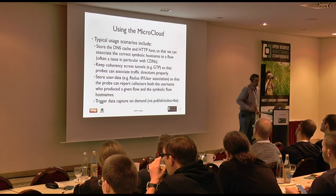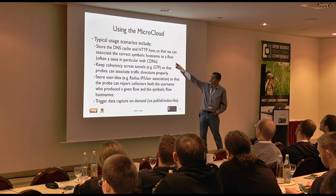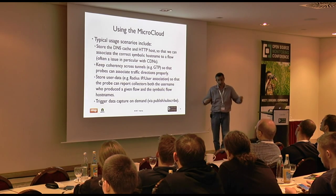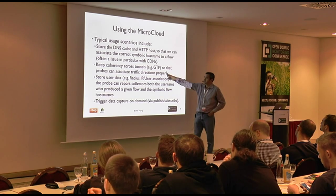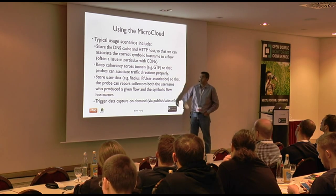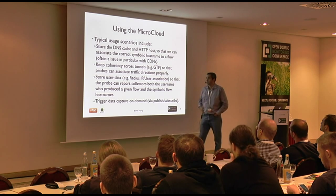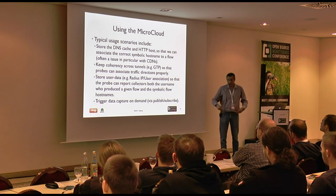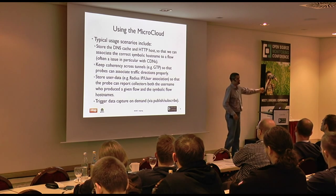Typical uses include storing the DNS cache — if you have multiple locations, everyone can go there instead of one central place. We store information about tunnels like GTP, a protocol used in mobile networks. For example, today I'm here in Nuremberg but if I go to the city center I will attach to another cell. If I want an aggregate view of what my phone is doing, I am forced to monitor several different points. With the micro-cloud, I can have a general view.